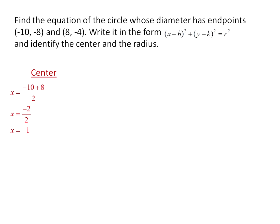To find the y-coordinate, we'll take the average of our y values. So negative 8 plus negative 4 over 2, we have negative 12 over 2, which is negative 6. And so the center of our circle is negative 1, negative 6.